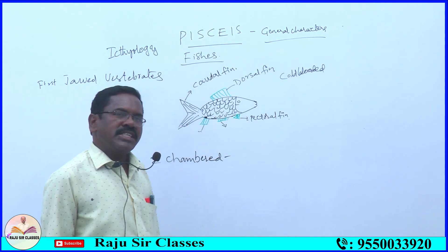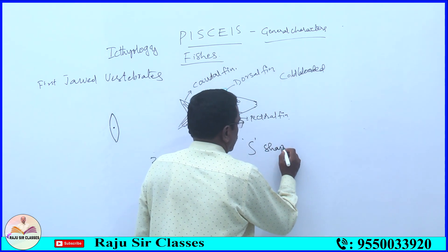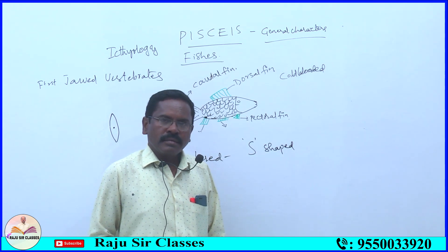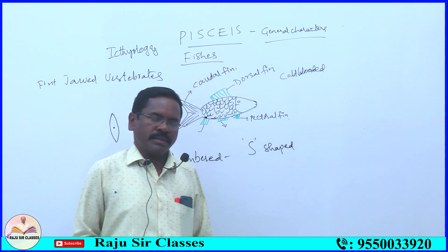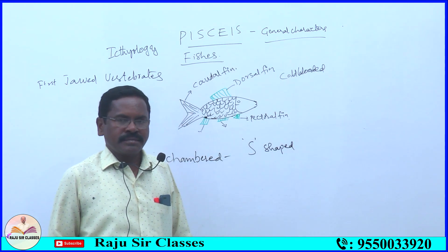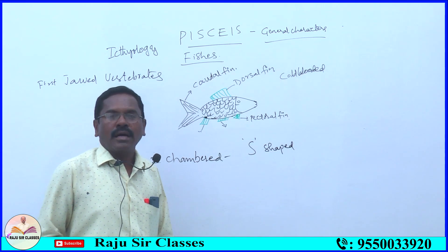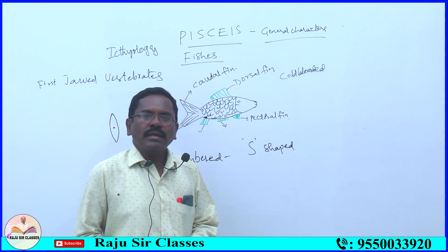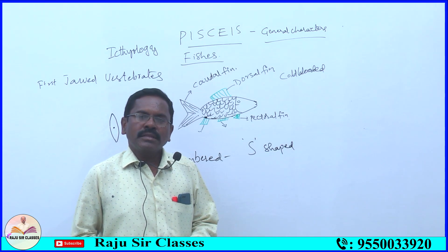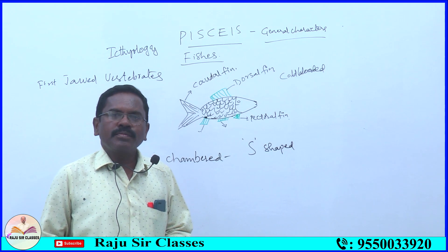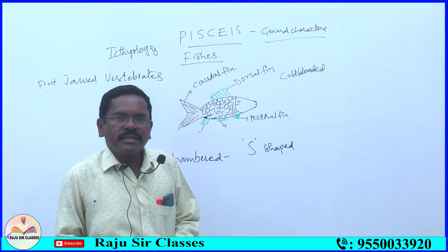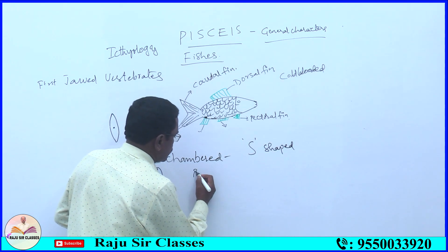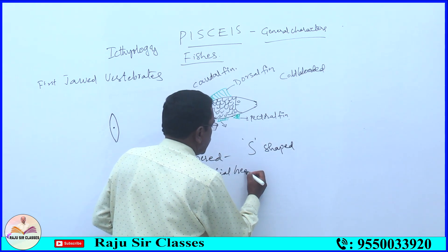In fishes, the heart is S-shaped. In other vertebrates except fishes, the heart is pear-shaped or conical-shaped. The heart of fishes is called a branchial heart because it pumps deoxygenated blood to the gills for purification. In gills, blood is purified — mixed with oxygen — becoming oxygenated blood.